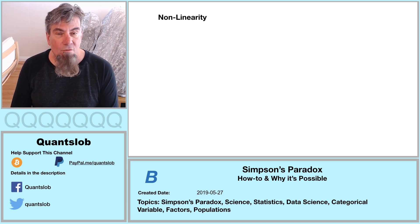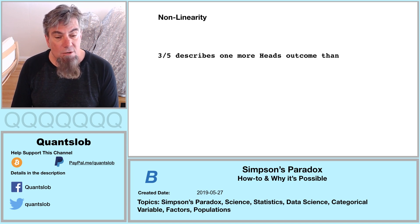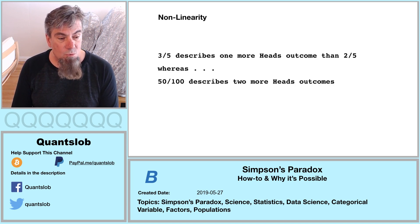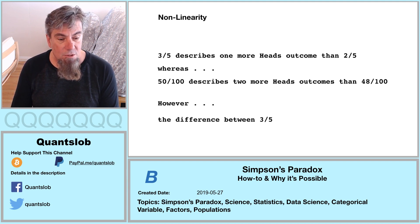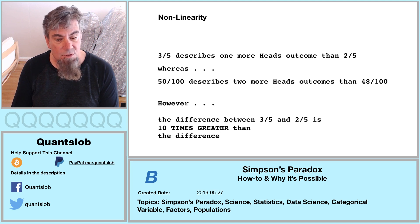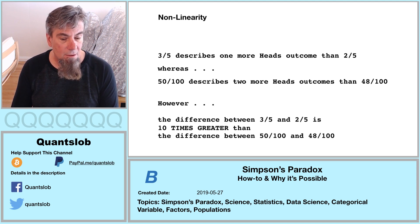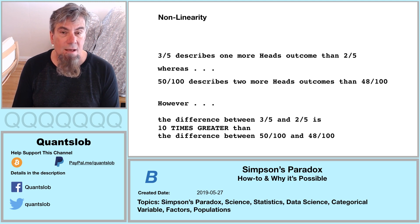Simply said, the value of a ratio is non-linear with respect to the denominator. The ratio of three-fifths describes one more heads outcome than two-fifths. The ratio of fifty-one-hundredths describes two more heads outcomes than forty-eight-one-hundredths. However, the difference between three-fifths and two-fifths is ten times greater than the difference between fifty-one-hundredths and forty-eight-one-hundredths. And there we have it.